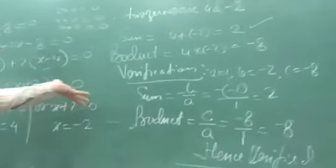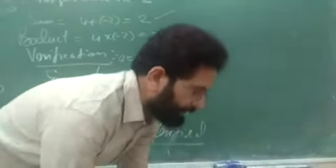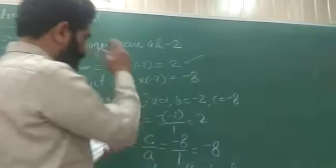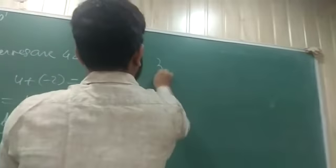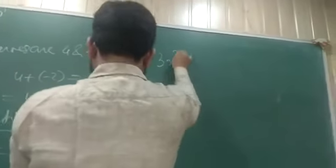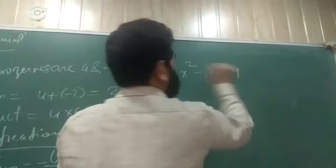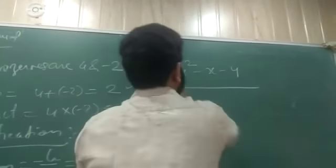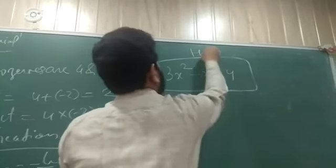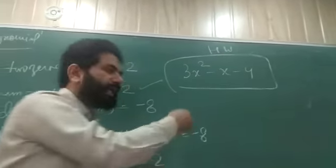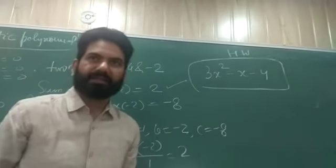Hence verified. The question is now complete. On the basis of this, you can find the answer to the next part as homework: 3x² − x − 4. In the next topic I will take you further. Thank you.